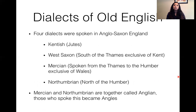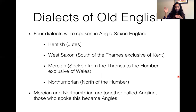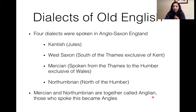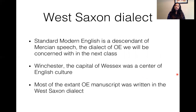When looking at dialects of Old English, there were four main dialects of Anglo-Saxon England: Kentish, spoken by the Jutish settlers; West Saxon, spoken south of the Thames exclusive of Kent; Mercian, spoken from the Thames to the Humber exclusive of Wales; and Northumbrian, spoken north of the Humber. Mercian and Northumbrian together were called Anglian. Standard Modern English is a descendant of West Saxon dialect combined with Mercian speech.